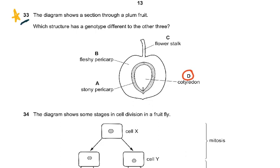Question 33 required candidates to recognize which parts of a fruit are composed of parent tissues and which are offspring — many found this challenging. In a section through a plum fruit, which structure has a genotype different to the other three? Only when the pollen nucleus fuses with the female gamete does a zygote form, from which develop the radicle, plumule, and cotyledons. The cotyledons are genetically different — just as a fetus is genetically different from the mother — while the rest is parent plant material.